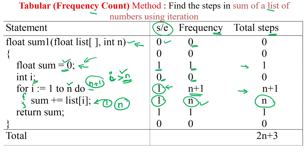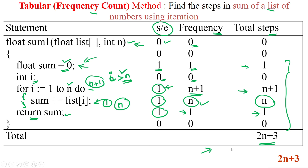Finally, we are returning the value of sum, which consumes one unit of time and executes only one time, giving a total step count of one. Adding all the steps together — 1 + (n+1) + n + 1 — we get 2n plus 3. So we can apply the tabular method to calculate the number of steps of a written algorithm.